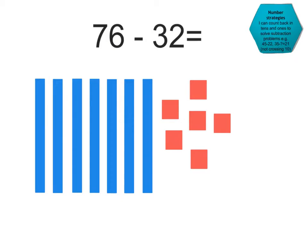I can count back in 10s and 1s to solve subtraction problems by not crossing the 10. So this little symbol here means subtraction, which also means take away. So my first number is 76, and I'm going to take away or subtract 32. So what I do here is I first of all look at how many 10s I've got and how many 1s I've got.